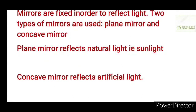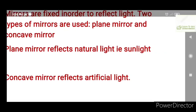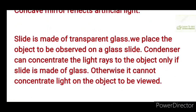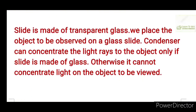Why is a slide made of glass used to place the material to be observed? The slide is made of transparent glass. We place the object to be observed on a glass slide. The condenser can concentrate the light rays towards the object only if the slide is made of glass; otherwise it cannot concentrate light on the object to be viewed.